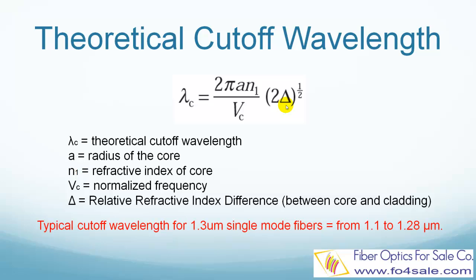The typical cutoff wavelengths for 1.3 micron single mode fibers range from 1.1 to 1.28 micron. This is designed in order to avoid modal noise and dispersion problems.